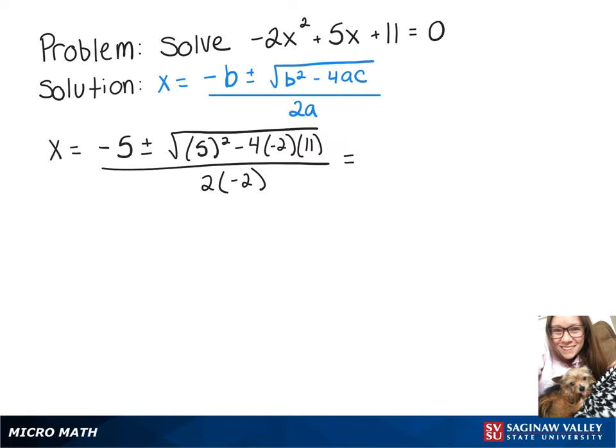Simplifying what we've got there in the square root, we now have negative 5 plus or minus the square root of 113 over 2 times negative 2, which is negative 4.